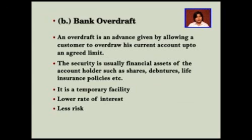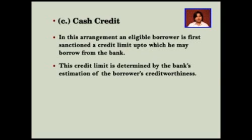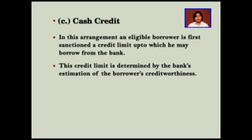Another type of loan facility is cash credit. The bank allows credit against immovable property and charges interest. In this arrangement, an eligible borrower is first sanctioned a credit limit up to which he or she can borrow from the bank. This credit limit is determined by the bank's estimation of the borrower's creditworthiness. However, the actual utilization of credit by the customer depends upon his withdrawing power. The withdrawing power depends upon the value of the borrower's current assets, which comprise mainly stock of goods, raw material, semi-manufactured or finished goods, the receivables, or other security which the borrower provides.